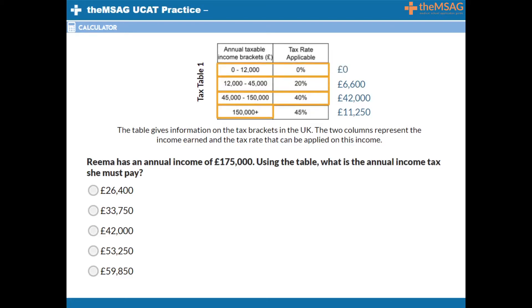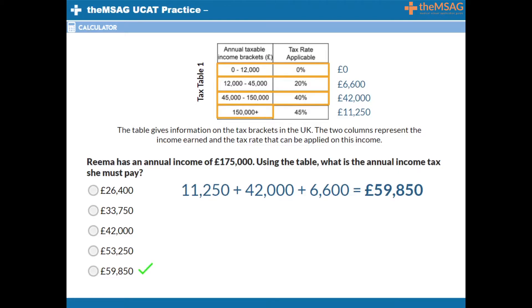To get the total amount, add the tax owed from each bracket. £11,250 plus £42,000 plus £6,600 equals a total of £59,850 income tax.